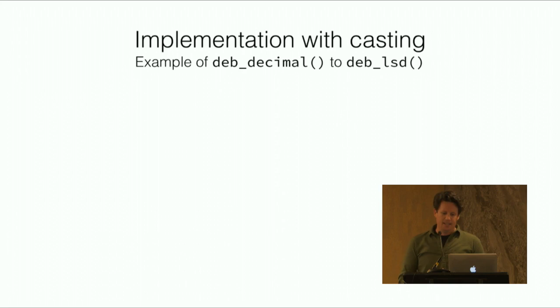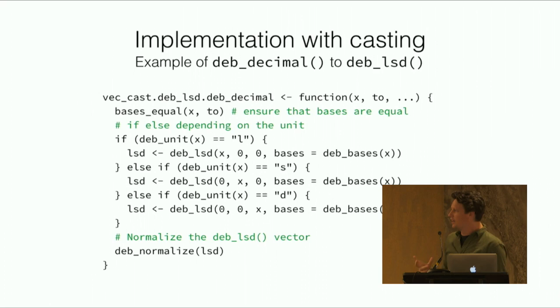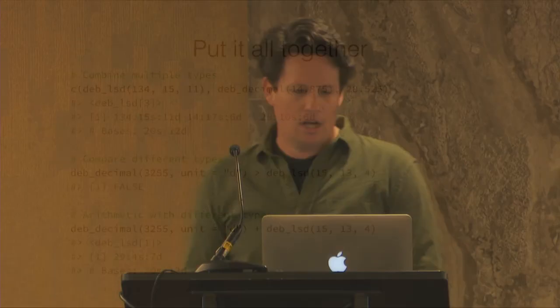Casting is a little bit more interesting because this is where we have the programmatic logic of the actual transformation. One reason why I think deb vectors is an interesting example is because I have two different kinds of vectors and so you have to think about how you can combine them in different ways. Here again the code is not necessarily super easy to read, but this is taking a deb_decimal and then converting it to this tripartite structure. Essentially what I'm doing is taking a simple if-else statement - what is the unit - and then from that unit placing it where it should be in a call to create a deb_lsd vector and then finally normalizing it so we get a normalized value. So we've done the compound unit arithmetic.